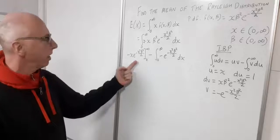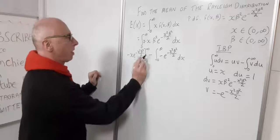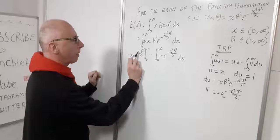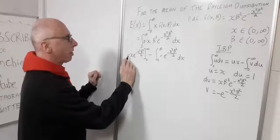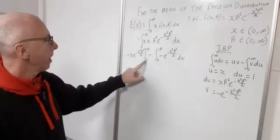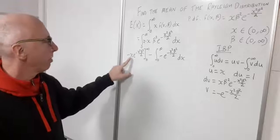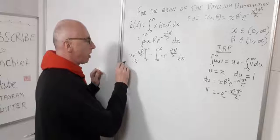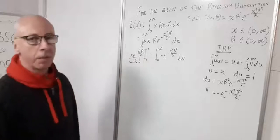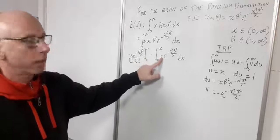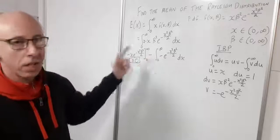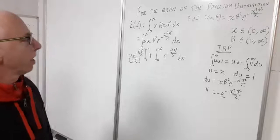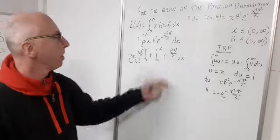Evaluating the u·v term from 0 to infinity: at infinity the exponential dominates and the whole expression goes to 0; at x equals 0 it is also 0. So that term vanishes. We also have a minus times a minus from the subtracted integral, so those cancel and we are left with a positive integral of e to the minus x squared beta squared over 2 with respect to x.